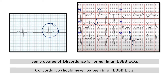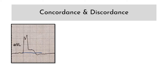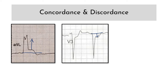So what does concordance and discordance look like on ECG? Depending upon the direction of the QRS, there are two ways concordance can manifest. If the QRS is positive, the ST segment being elevated is referred to as concordant ST elevation. If the QRS is negative, the ST segment being depressed is referred to as concordant ST depression. Both concordant ST elevation and concordant ST depression should never be seen in an uncomplicated LBBB. When it comes to discordance, you can have discordant ST elevation and discordant ST depression. Because the Sgarbossa Criteria explicitly mentions only discordant ST elevation, we will be discussing only discordant ST elevation.